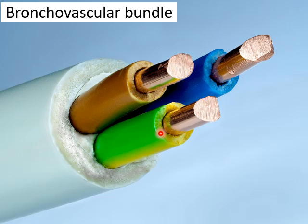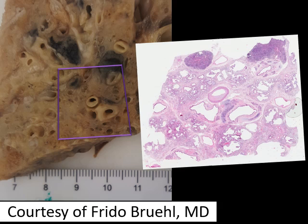The veins branch off to the side and are not part of the bronchovascular bundle. The third structure that stays with the bundle is typically the lymphatic. So the triumvirate is: bronchus, pulmonary artery, and lymphatic — going from beginning to end. The bronchus and artery are easiest to appreciate together, and the interstitium forms a sheath covering this bronchovascular bundle.